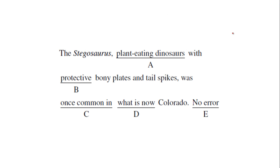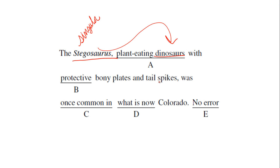'The stegosaurus, plant-eating dinosaurs with protective bony plates and tail spikes, was once common in what is now Colorado.' I want to bring your attention to the collective noun 'stegosaurus' — we're talking about the species, so this noun is singular. But what does it refer to? It goes to 'dinosaurs,' which is definitely plural. So there's a disagreement in number. The error occurs at A. We change 'dinosaurs,' which is plural, to 'dinosaur,' which is singular.